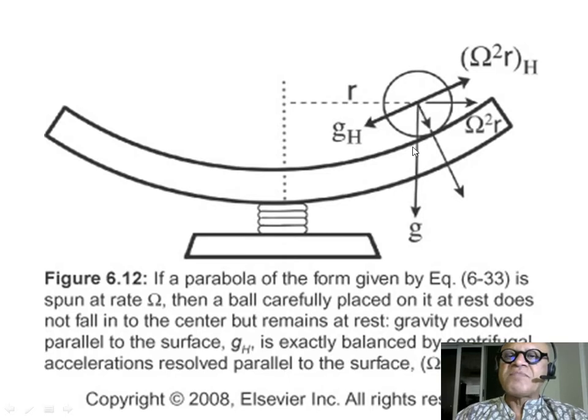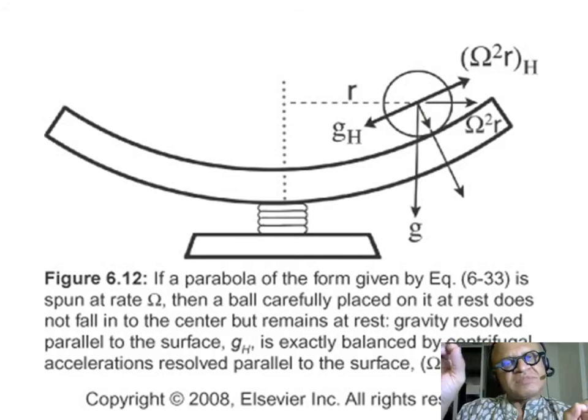So, now you can split this omega squared r into a component that is along the surface and down perpendicular to the surface. So, you have a component of omega squared r that's projecting along this direction and along this direction. Do I have it right? No, along this direction. So, you are going to end up with a normal force acting here.